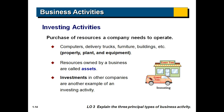Let's look at investing activities from the perspective of the company. Investing activities occur when we buy resources that a company needs to operate — things like computers, delivery trucks, furniture, buildings, and land. These often get labeled under the accounting title property, plant, and equipment. These resources owned by a business are called assets — essentially things the business owns, or resources of the company. Investments in other companies are also an example of an investing activity. Buying assets, whether property, plant, and equipment or investing in another company, are all investing activities.